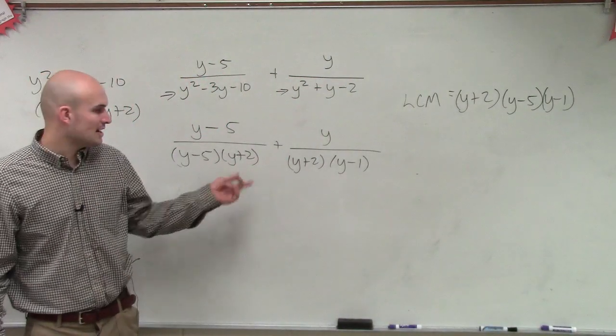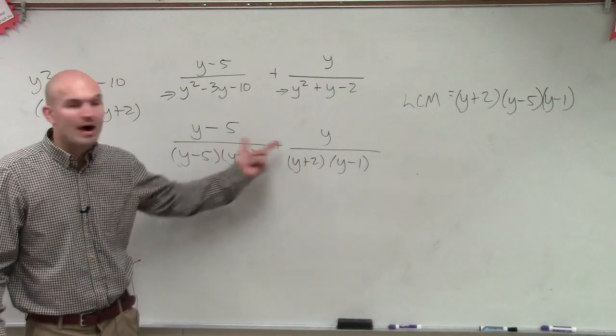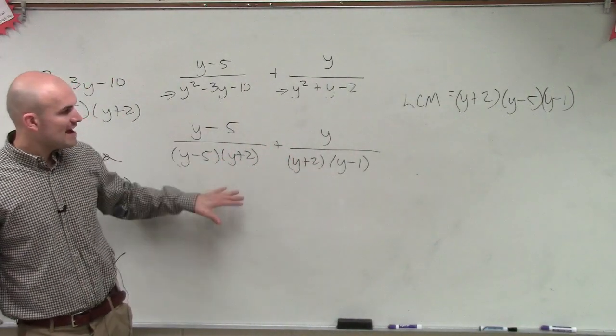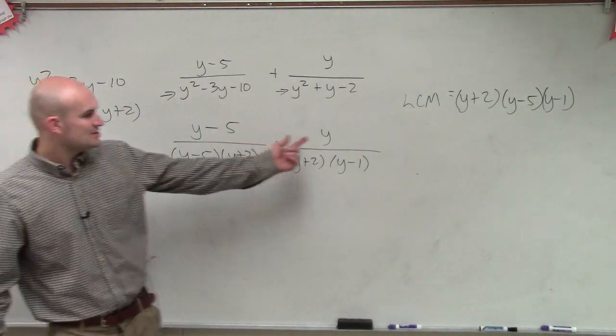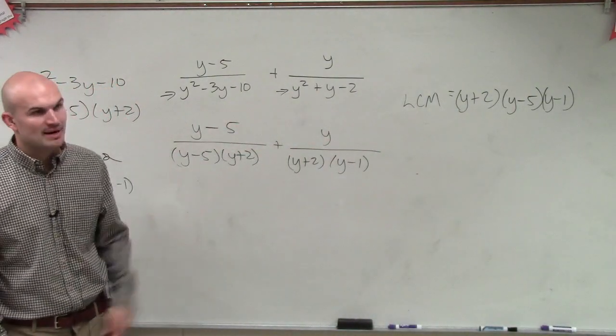if I were to multiply both of these by each other, I would have a redundancy of y plus 2. But now when I factor them out, I notice that my LCM needs to only contain y plus 2, y minus 1, and y minus 5.